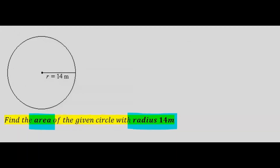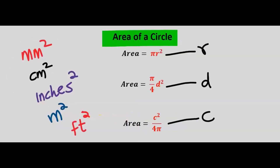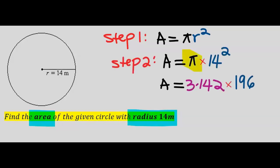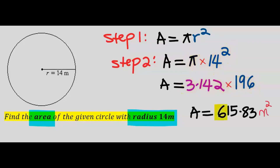Let's find the area of the given circle with radius 14 meters. For the area of a circle with a given radius we're going to use pi r squared. Step one: write out the formula, which is pi r squared. Next, substitute: pi is taken as 3.142, and 14 squared is 196. The area is 615.83 meters squared to two decimal places and five significant figures.